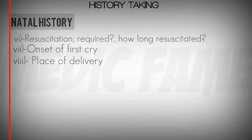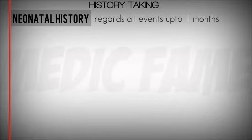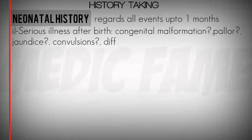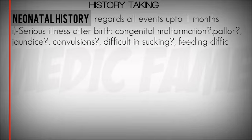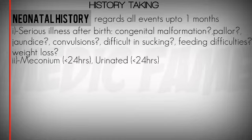Neonatal history means all events up to one month after delivery. Important components include serious illness after birth, any congenital malformation or complications such as jaundice, convulsions, difficulty sucking or feeding, or weight loss. The second component is whether the child passed meconium, which normally occurs before 24 hours after birth.